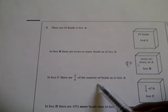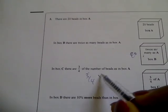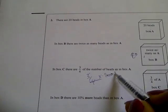In box C there are three quarters of the number of beads in box A. That's 3 over 4 times 20, that's 15.